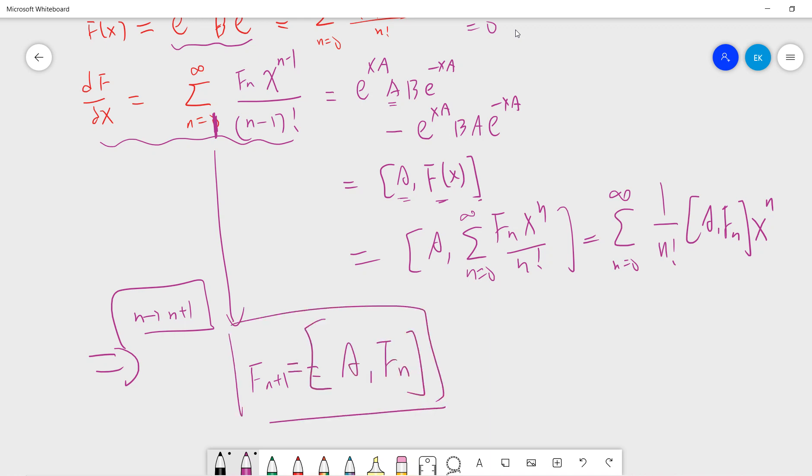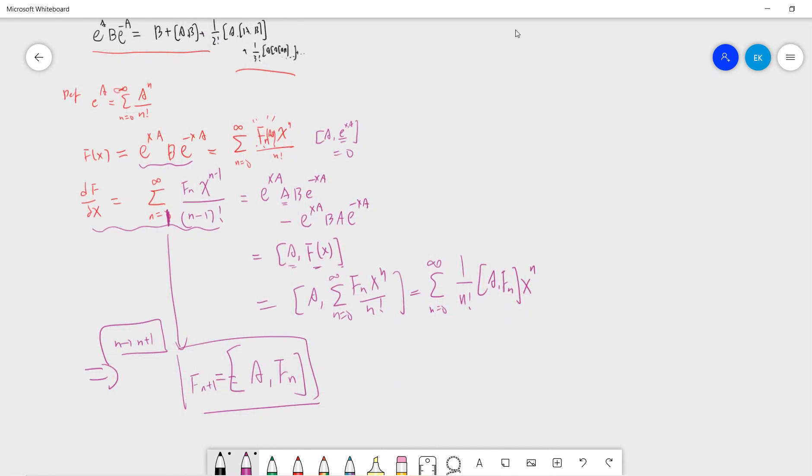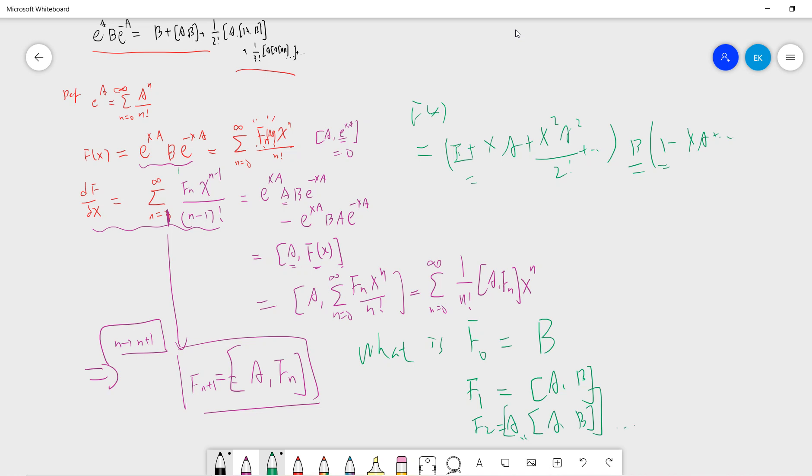What is f(0)? By definition, f(0) is just the first term, so f(0) is just B. You can write f(x) as identity plus xA plus x²A²/2 times B times (1 - xA). The first term is B, and the second term f(1) is just AB, f(2) is just AAB, and you keep going by using this.